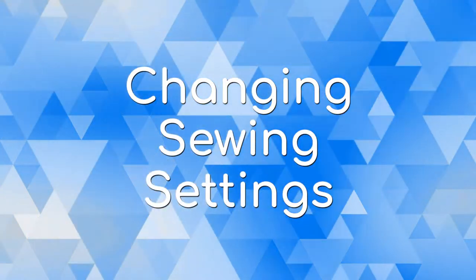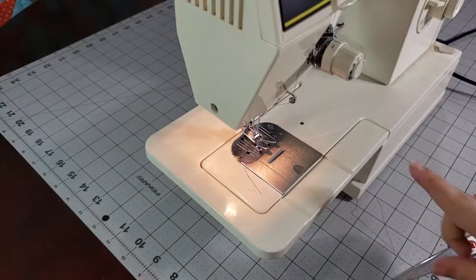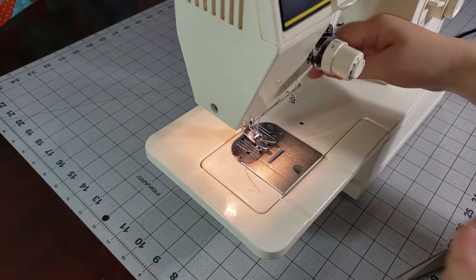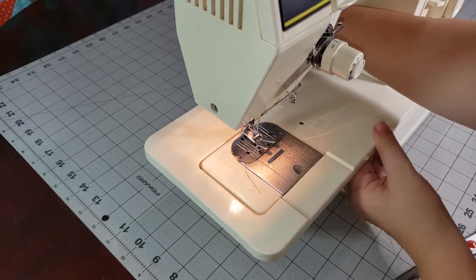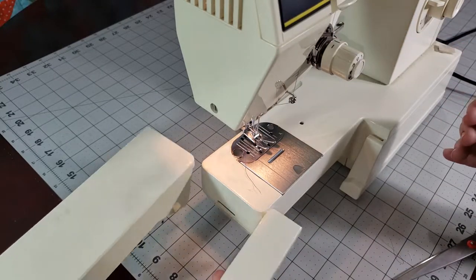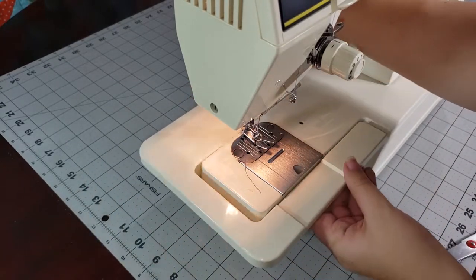Here are some of the basic features of this machine. To use the machine in free arm mode, lift the extension table from the front edge, slide it off to the left. When you're done, slide it back into place.